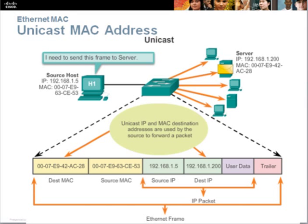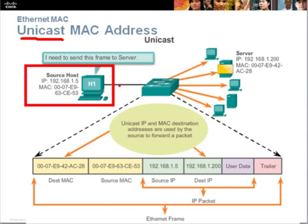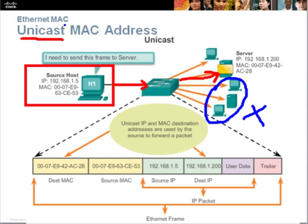There are a few ways of transmitting the MAC address between a computer and other devices. The first way is the unicast MAC address, where a source computer sends a unicast MAC address to only one specific destination server. The rest of the other servers do not receive it. Essentially, a unicast MAC address is meant for one destination only.